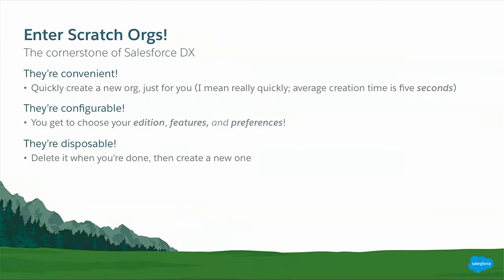But sometimes you need some stuff in there because you're developing against features or preferences. We make Scratch Orgs highly configurable. You can create Scratch Orgs in amazingly different flavors, and we'll be showing that a little bit later in a demo. And once you're done with that Scratch Org — you're done with your development, you've done your experiment — they're disposable. I'll go into a bit more detail of why Scratch Orgs are disposable and why you will want to dispose of them.